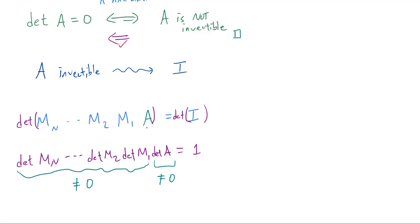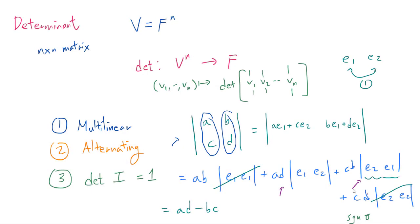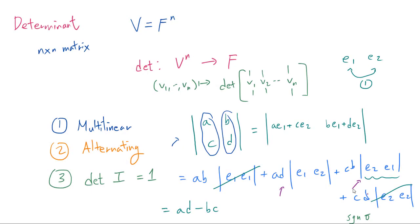Implicit in this proof are all the ideas needed to show that det(A·B) = det(A)·det(B) for any n×n matrices A and B—this is one of the problems for this episode. I hope you have a better understanding of what exactly determinant is, and I will conclude this episode here.